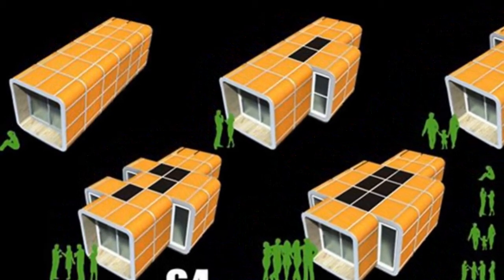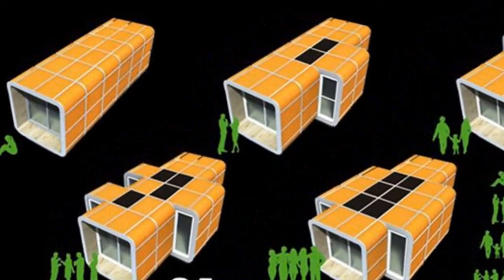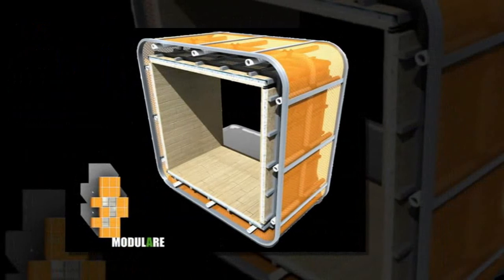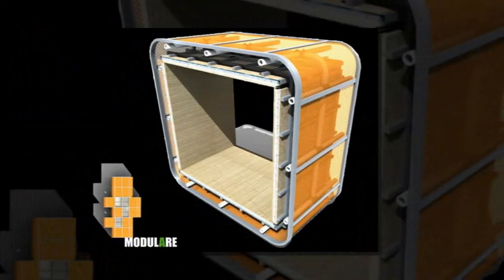Each square box is completely prefabricated and includes structural stability, interior finishes, space for utilities in the wall, insulation and an outside rain screen.